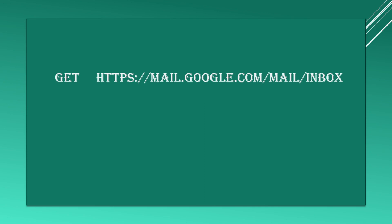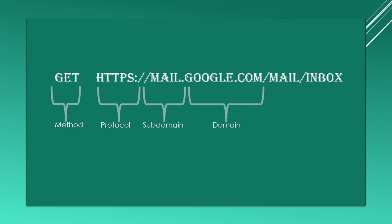Let's look at the API content or API format. This is a simple URL or API. An API consists of method or HTTP request type, protocol, domain or subdomain, directory, and request or response. For the method, we commonly use GET, PUT, POST, or DELETE. For the protocol, there are HTTP and HTTPS.